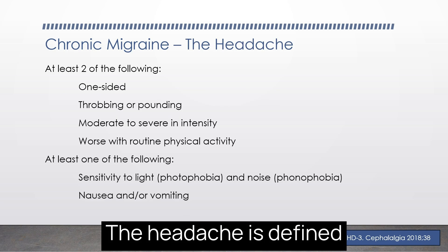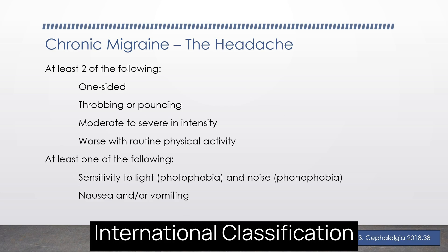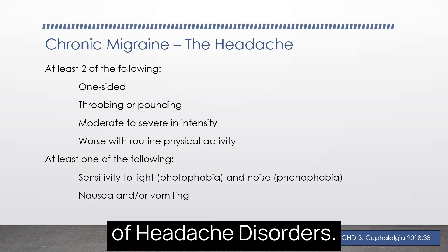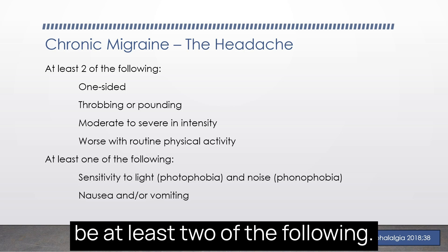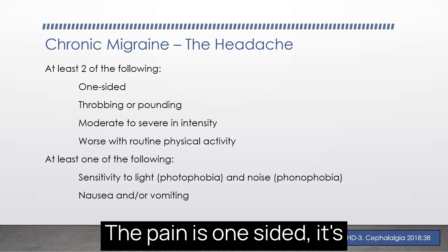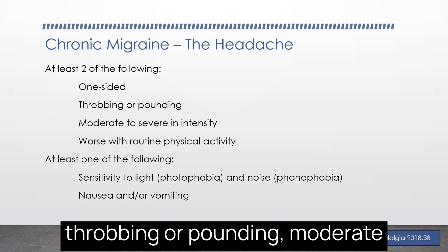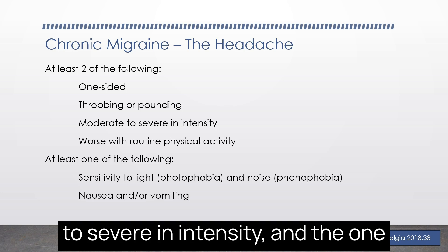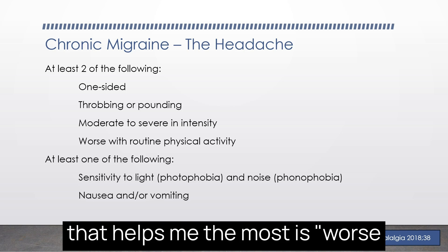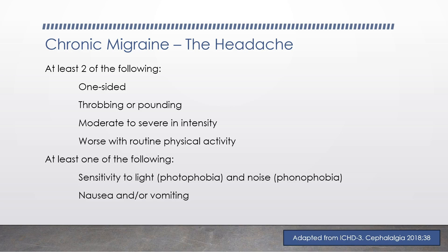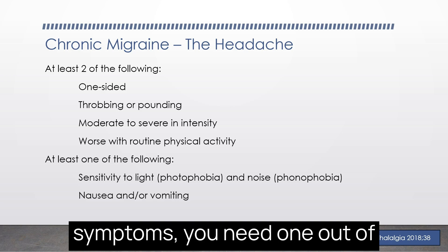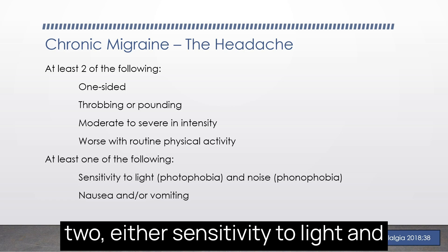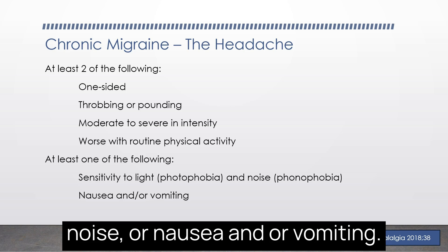The headache is defined using criteria from the International Classification of Headache Disorders. Regarding headache characteristics, there should be at least two of the following: pain is one-sided, throbbing or pounding, moderate to severe in intensity, and — the one that helps me the most — worse with routine physical activity. For associated symptoms, you need one out of two: either sensitivity to light and noise, or nausea and/or vomiting.